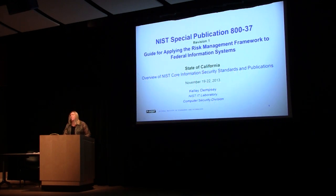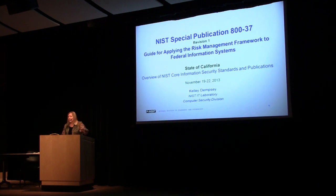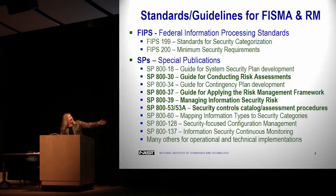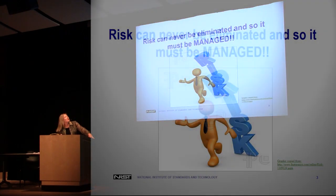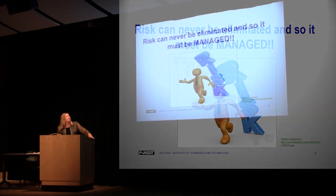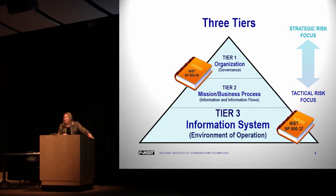We're going to talk about SP 800-37 Revision 1, which is the guide for applying the Risk Management Framework to federal information systems. It's pretty flexible and can easily be applied to non-federal systems as well. We saw this list earlier of various publications. We want to manage risk — we can't eliminate it, so we need to know about it and manage it. We're living at the system level for the Risk Management Framework.